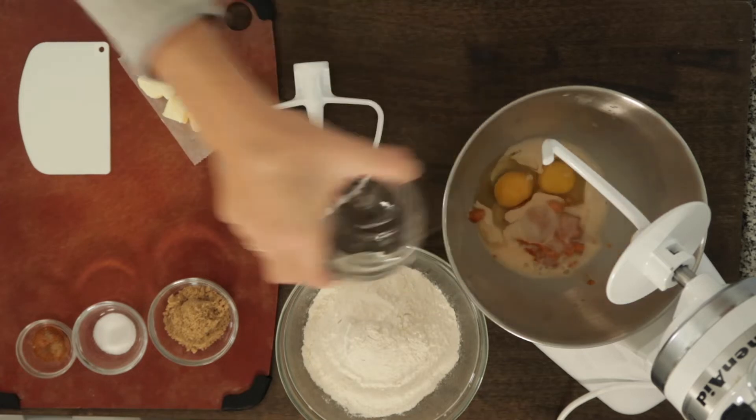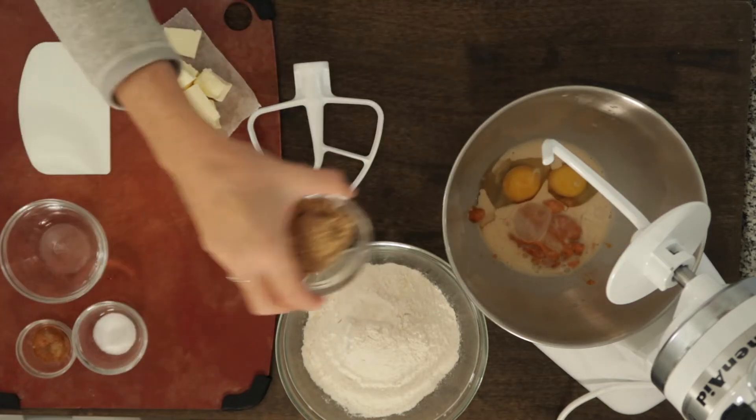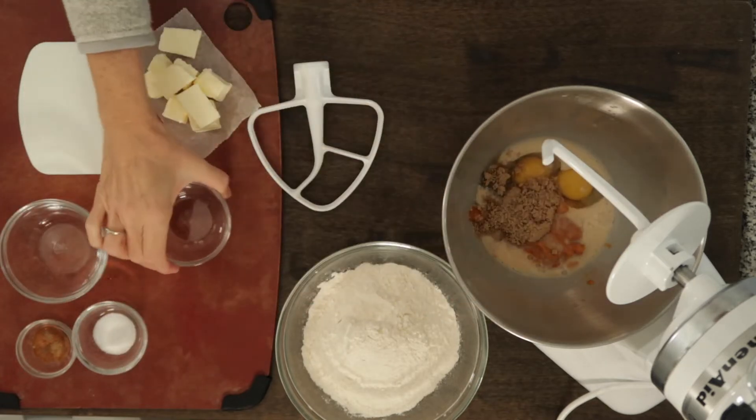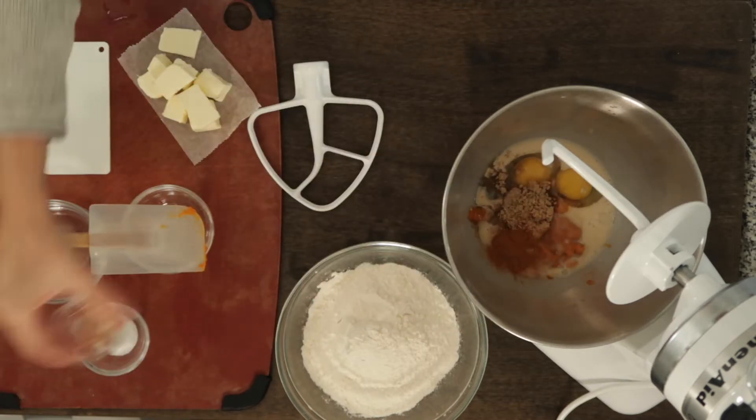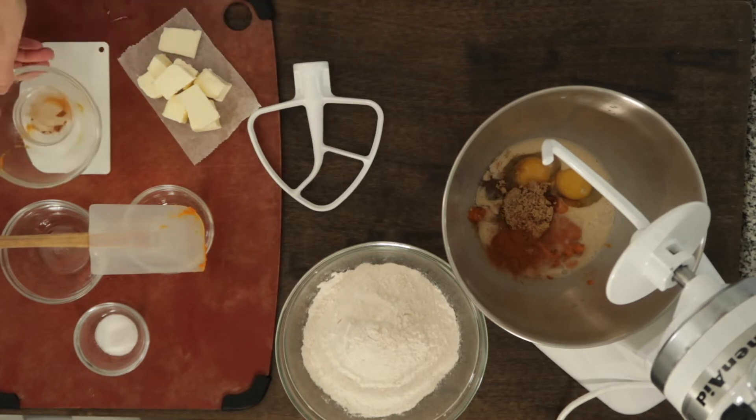Then grab the eggs, the brown sugar, pumpkin pie spice, and the flour.